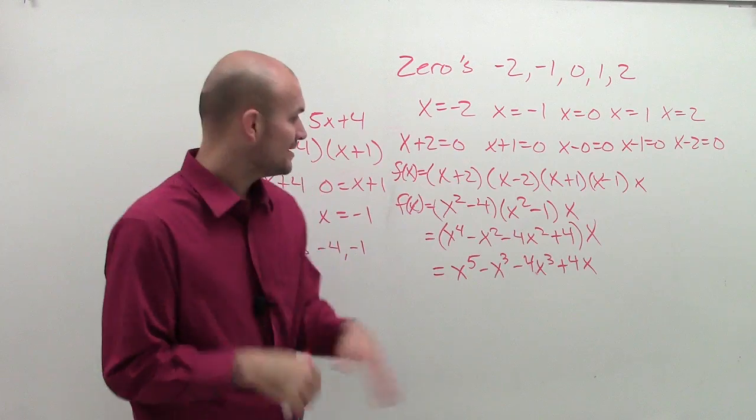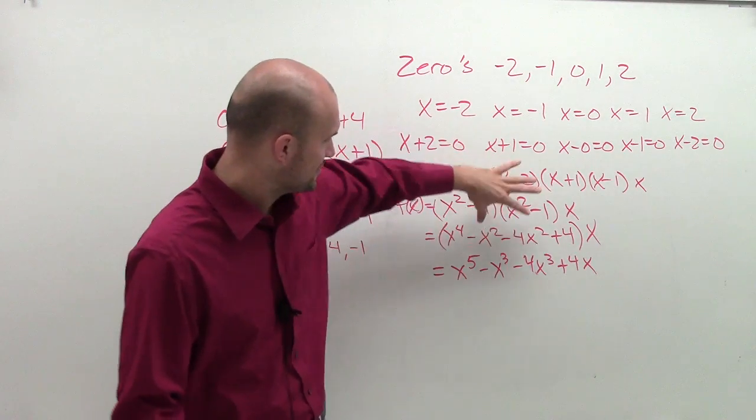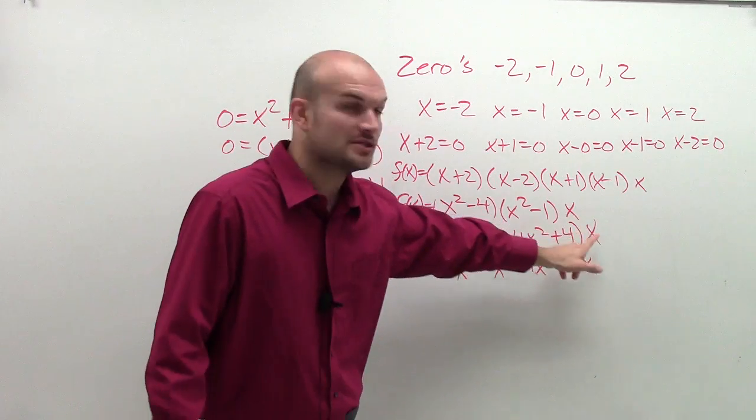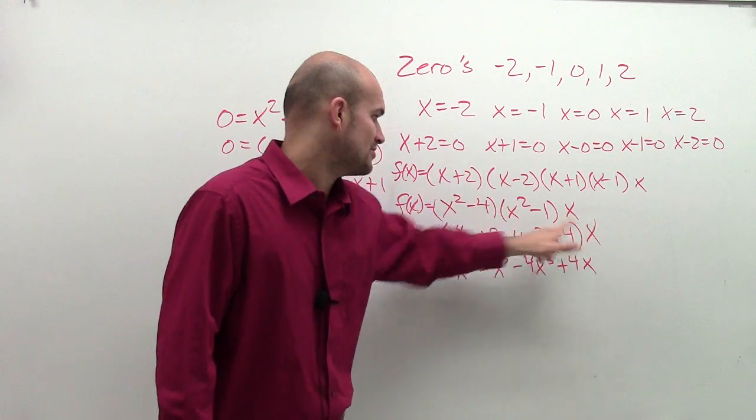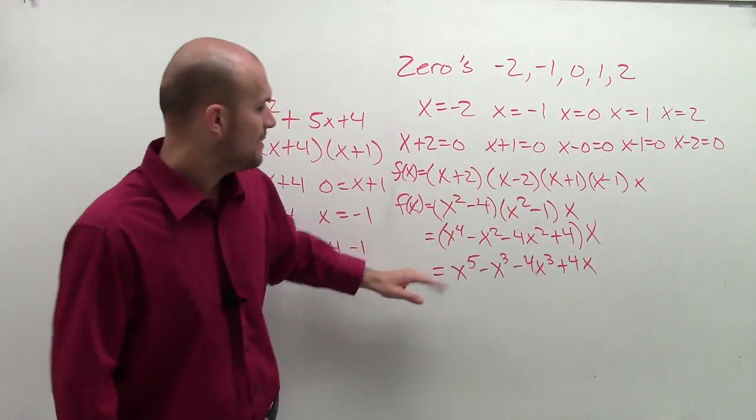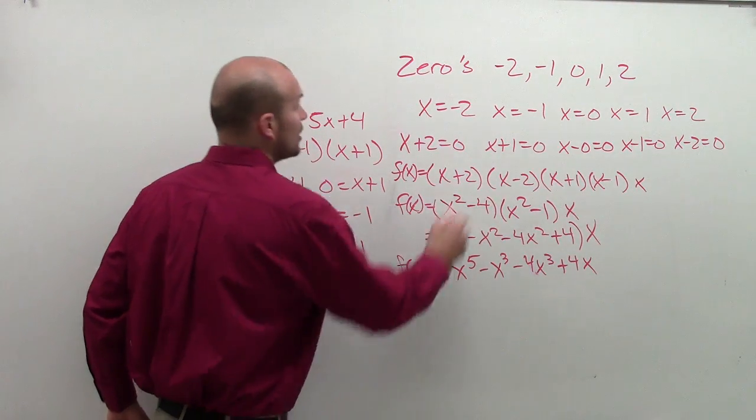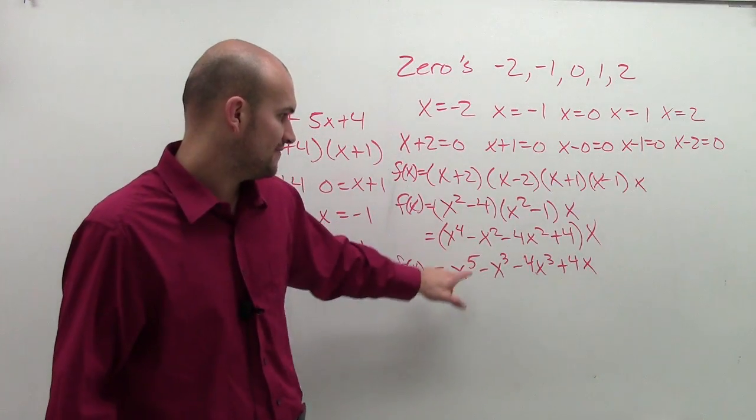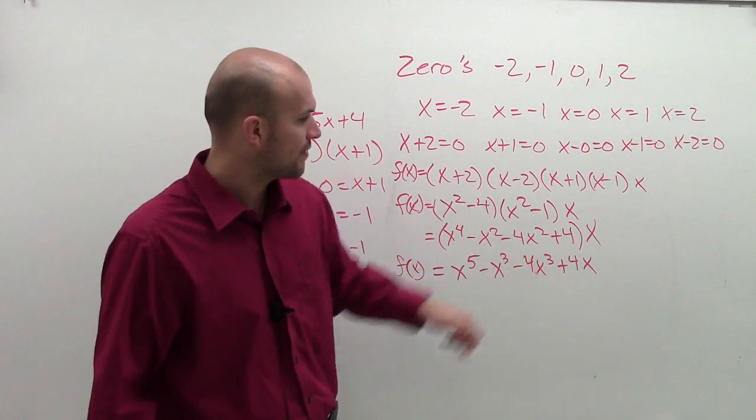Perfect. Sounds annoying, right? So all I did was I multiplied these two to get this. Then I'd use the distributive property to distribute to each one of my terms. And my final polynomial with the zeros of negative 2, negative 1, 0, 1, and 2, provides me with x to the 5th minus x cubed minus 4x.